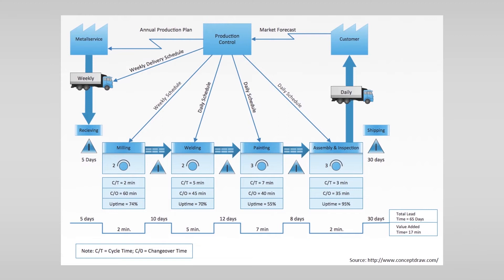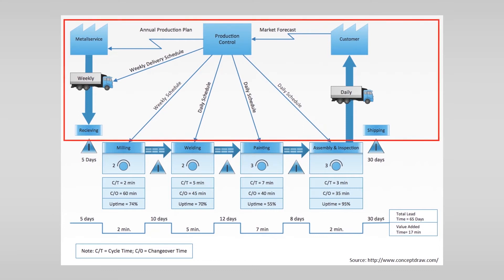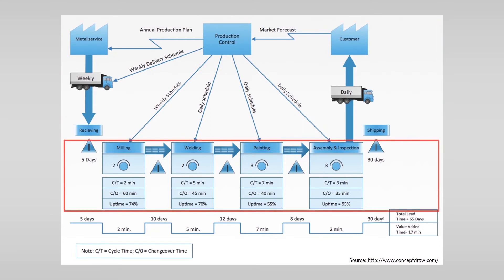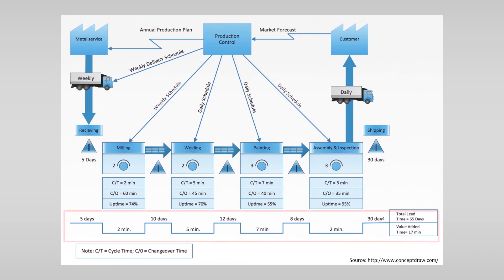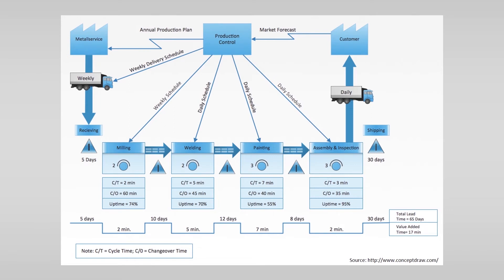Here you see an example of a value stream map. The example shows the current state of a metal processing plant. In another video we will go through this example in more detail and discuss the different symbols that are used. For now we can see that the map gives a graphic representation of the information flow — the thin arrows — the material flow — the thick arrows — and the value and non-value add time. This in turn helps to understand and improve the shop floor organization.